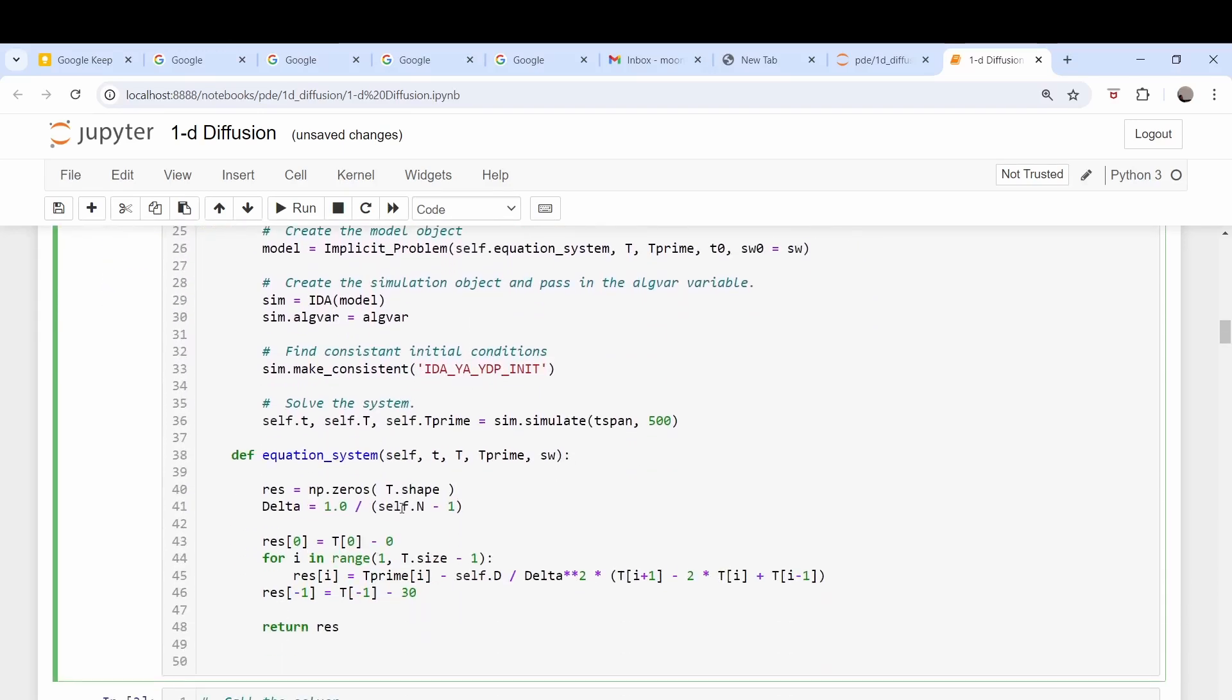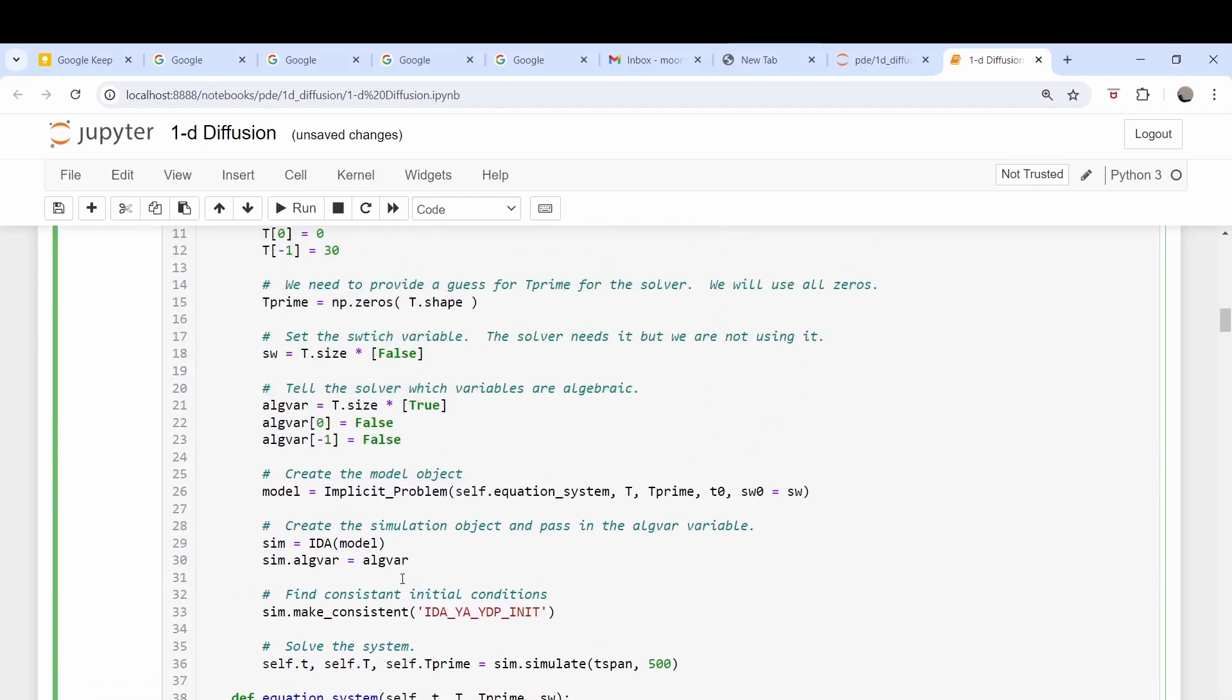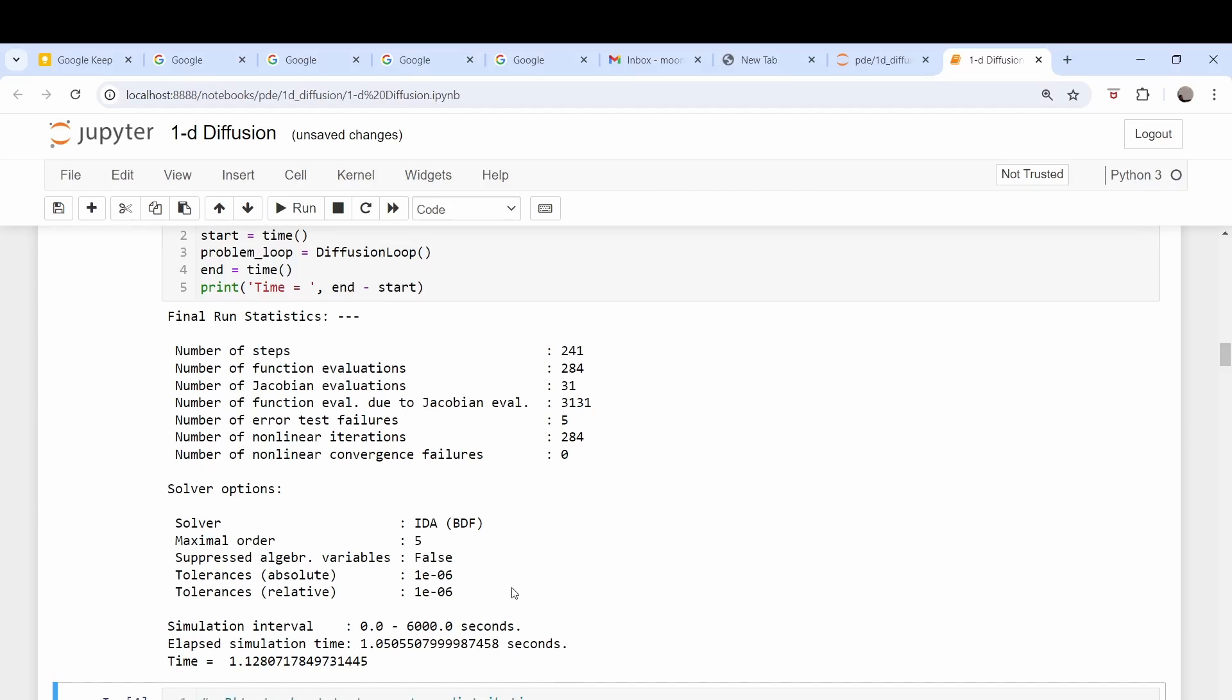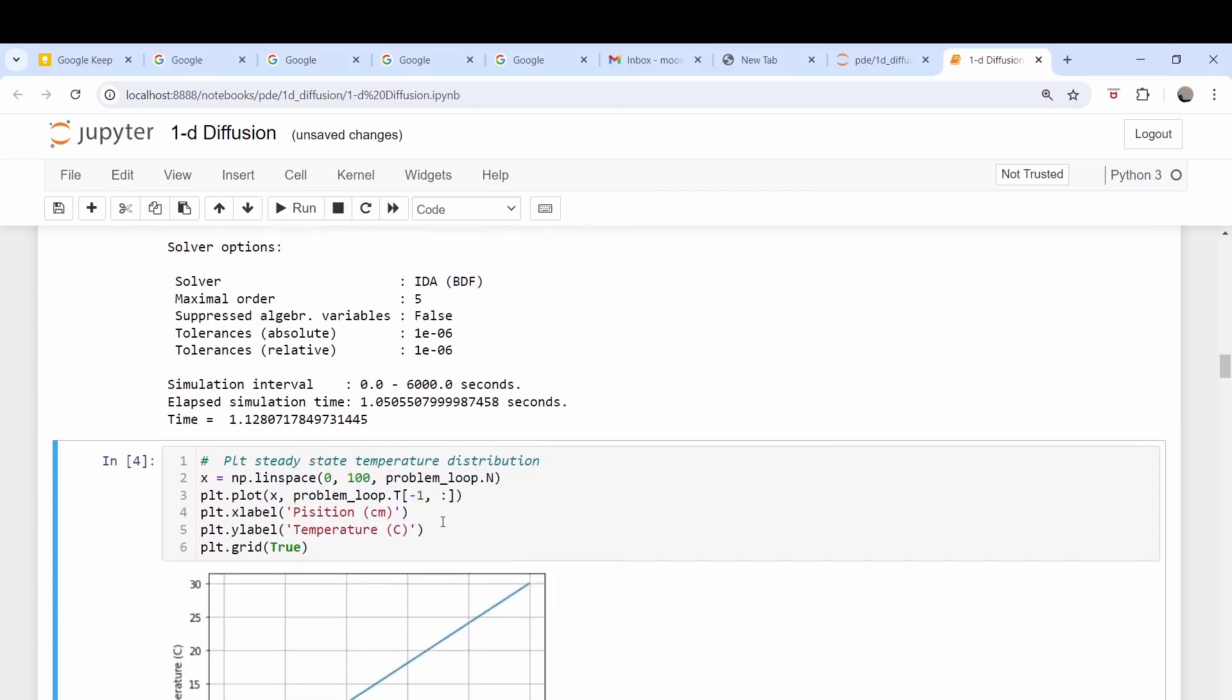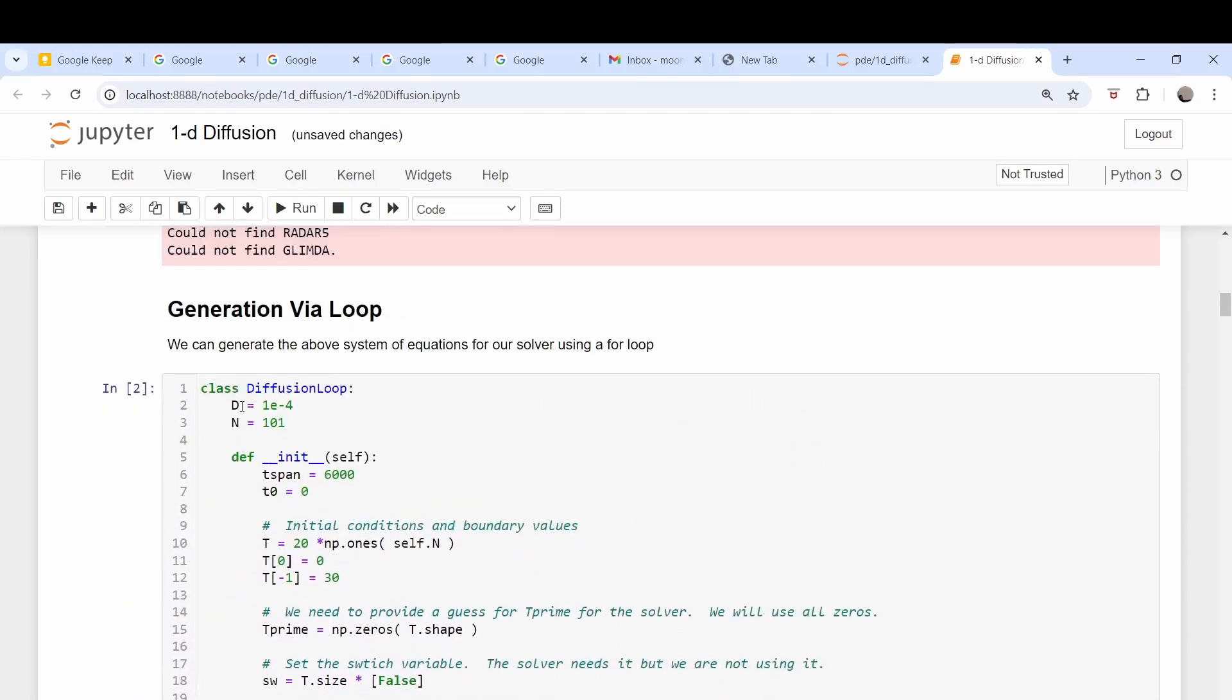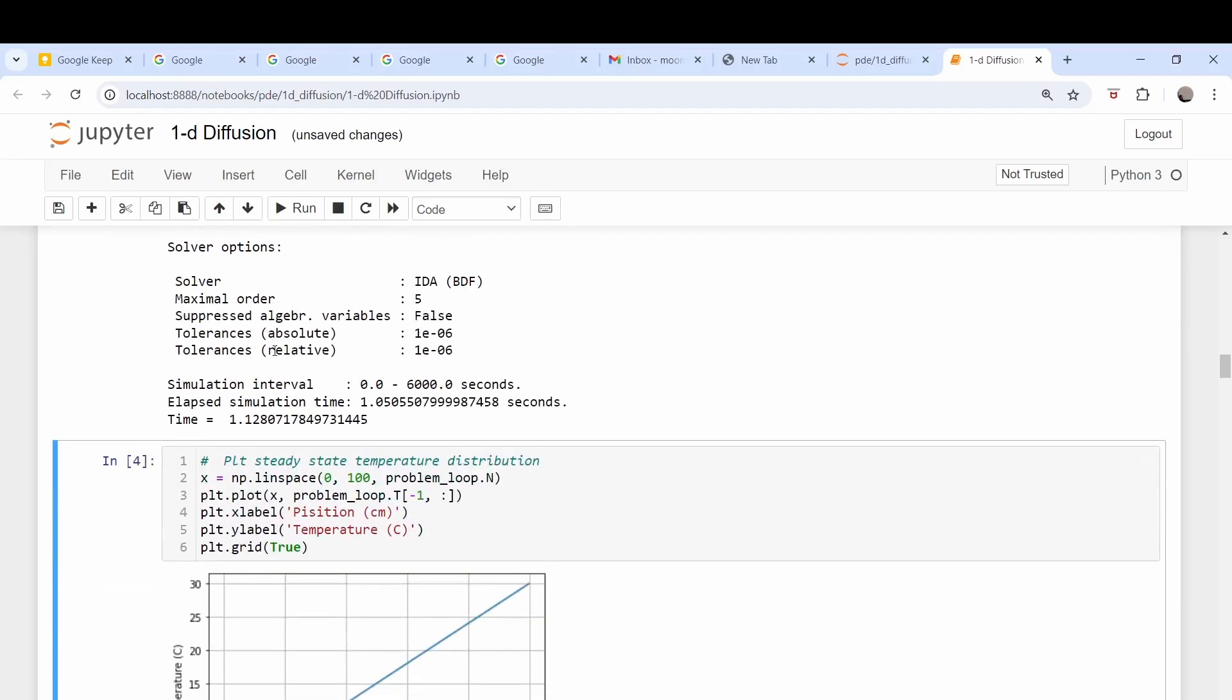So what we did is to generate that system of equations, we used a for loop basically to generate all those equations, and then we use our Assimilo differential equation solver to solve it. So let me run this code here and see how long it takes to run. So it was a little over a second. Let me see how many grid points we had here - we had 101, so that's not too bad.